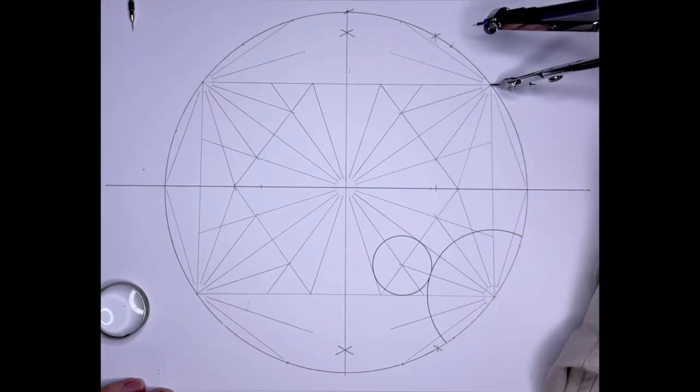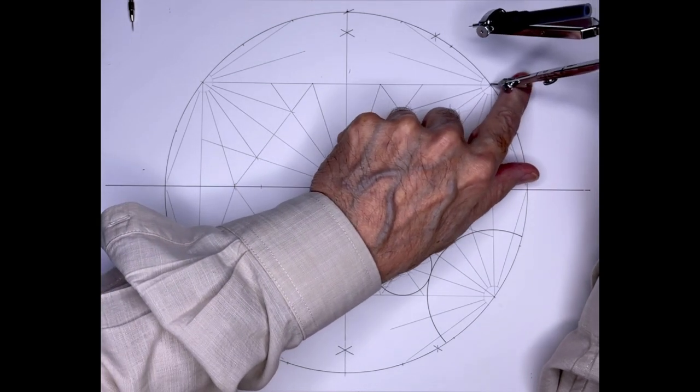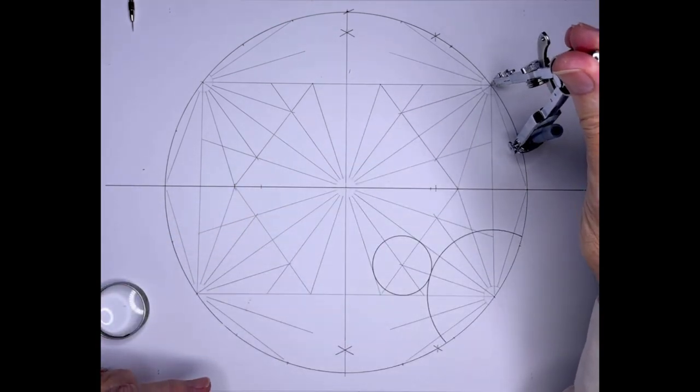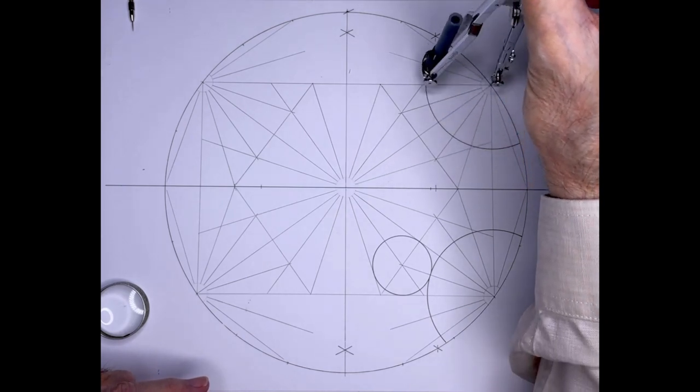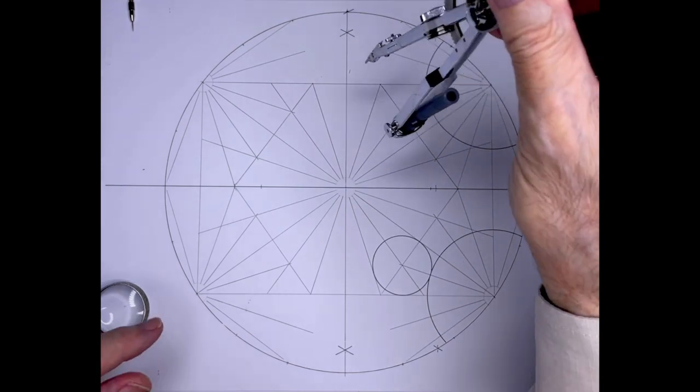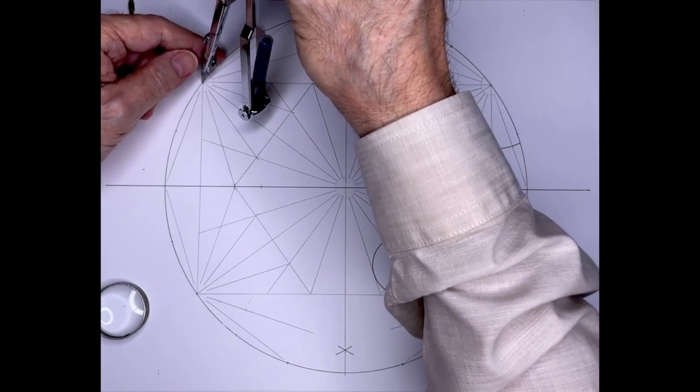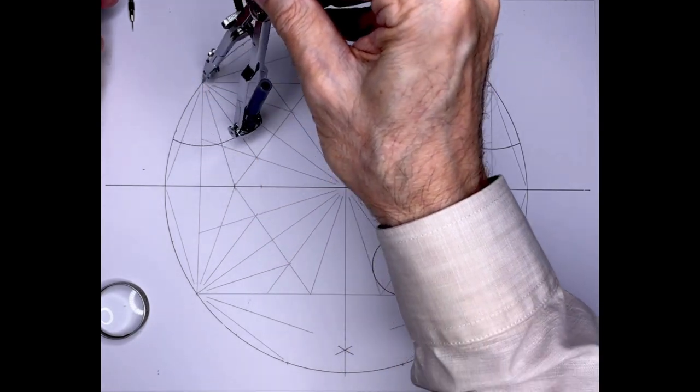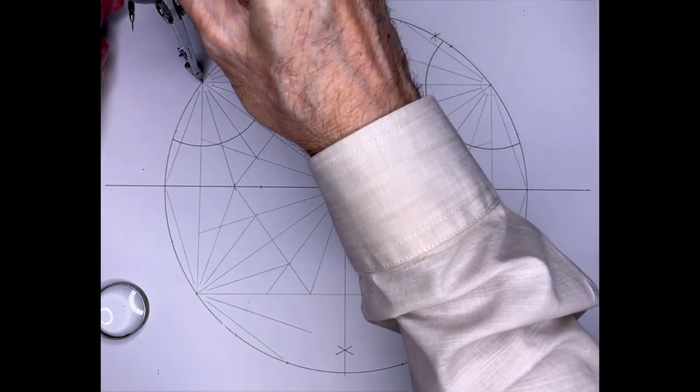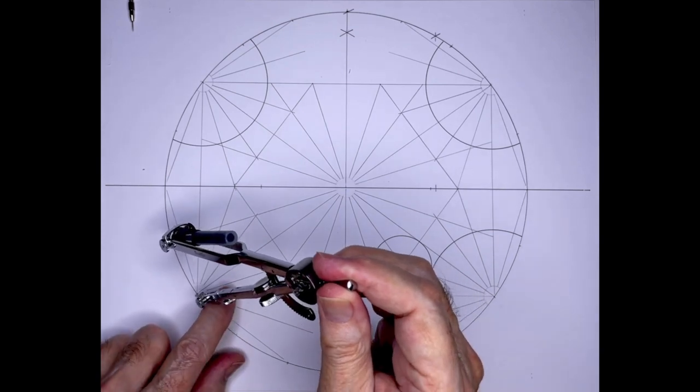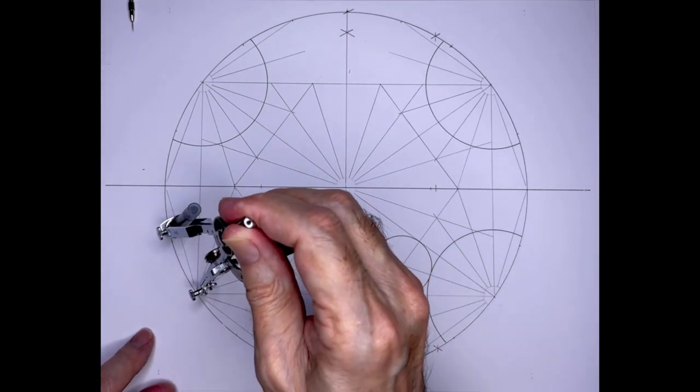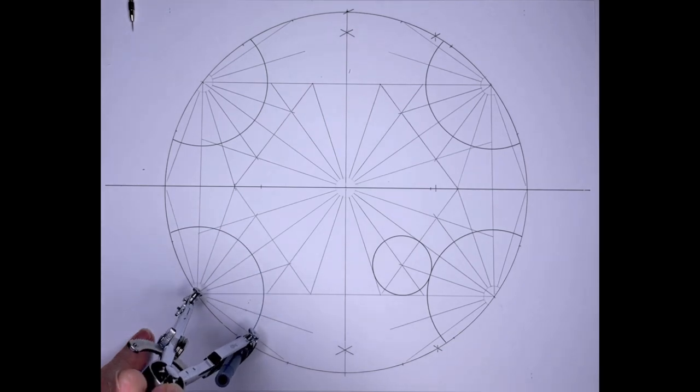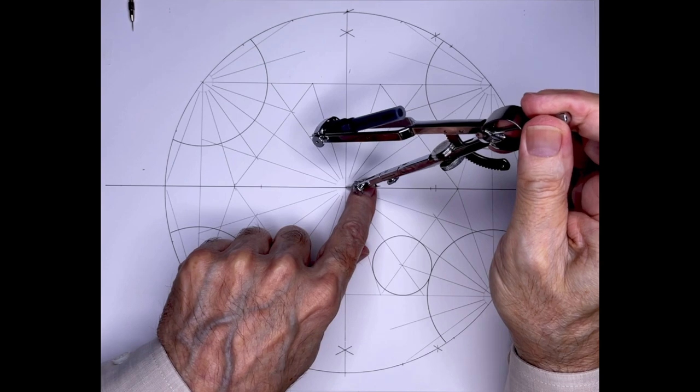I forgot to mention earlier, the reason I'm so slow when striking circles is this is a very fine technical pen, and they don't like fast feed. They need to be drawn slowly, so they feed evenly and give a good line quality.